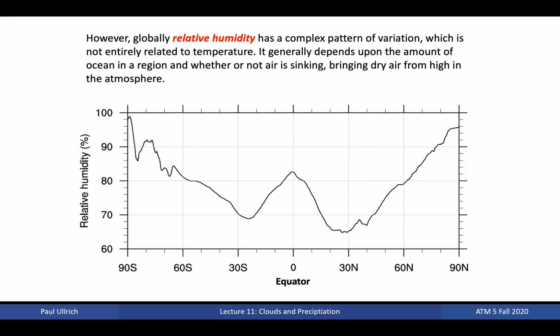Here we see a cross-section of relative humidity along the surface, again showing peaks around the equator and poles. In fact, the polar regions have quite high relative humidity, driven up by their low temperatures. The relative humidity at the surface actually shows a complex pattern of variation, not entirely related to temperature. The relative humidity at each latitude depends on the amount of ocean at that latitude, and whether air tends to rise or sink.